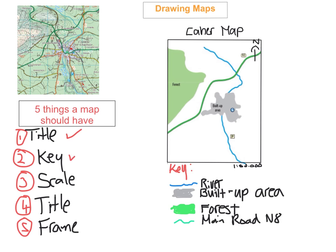The scale is shown here — it's 1:50,000. This will always be on the inside of your OS map, down along the bottom, given in three different ways, just like we looked at in the last video. If you half the size of the map, the scale would become 1:100,000, but if you keep the same size it stays at 1:50,000.